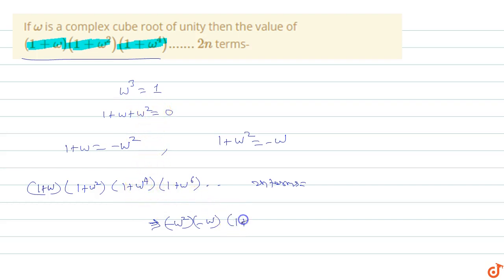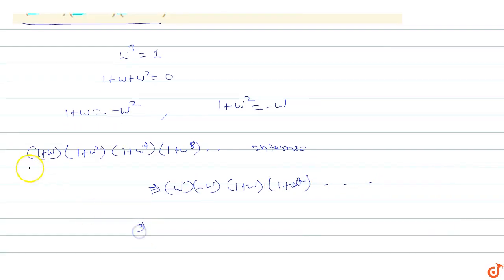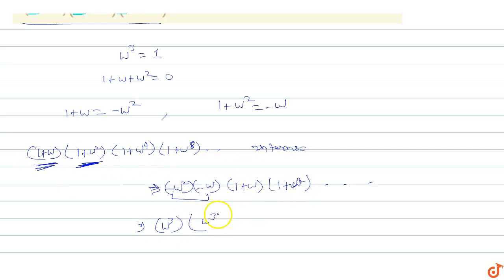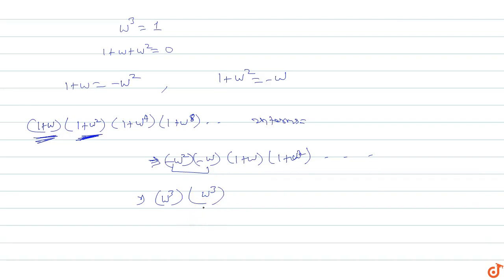Similarly, 1 plus omega to the power 6: since omega to the power 6 equals (omega cubed) squared equals 1, so 1 plus omega to the power 6 equals 1 plus 1... continuing this pattern. Each pair of consecutive terms gives (1 + omega)(1 + omega squared) equals negative omega squared times negative omega equals omega cubed equals 1.